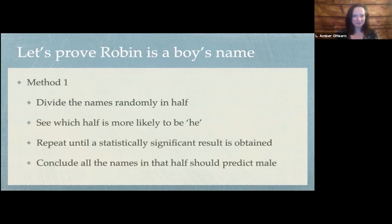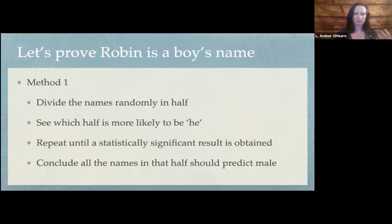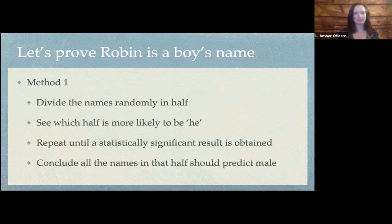Here's a method that I think you'll agree is not that great, but it could work. We divide the names randomly into two equal halves of categories and then we see which half is more likely to be 'he'. Randomly, one of them is going to be more likely to be 'he'. And if it's not statistically significant, then shuffle them again and do it until it is. Eventually we will get a category and we can say all of the names in that half should predict male.